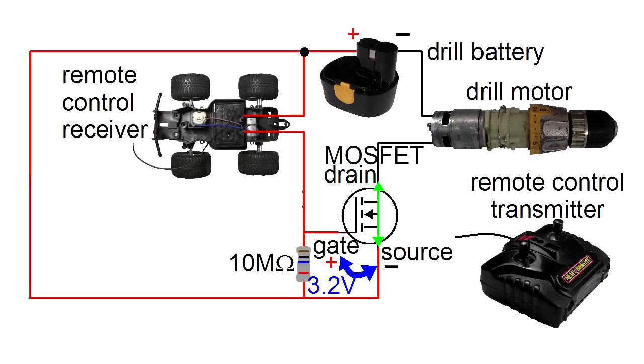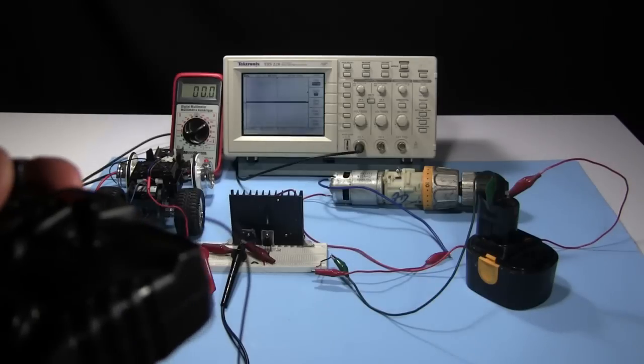It prevents a lot of current from taking this route, allowing a voltage to remain across the gate and source. The MOSFET should now be on, but the drill doesn't run.